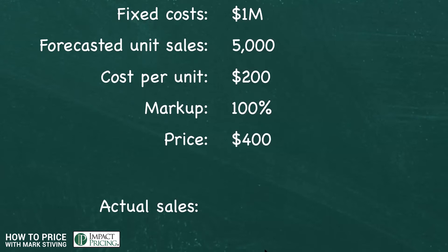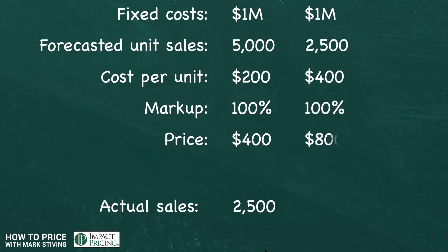We projected we're going to sell 5,000 units, but in reality the quarter ended and we only sold 2,500 units. Finance has to make a few adjustments. Fixed costs didn't change, but now we know we're only going to sell 2,500. So our cost per unit goes from $200 to $400. We still want our 100% markup. The price just went from $400 to $800. If we sold 2,500 units at $400, are we still going to sell 2,500 units at $800? Probably not.